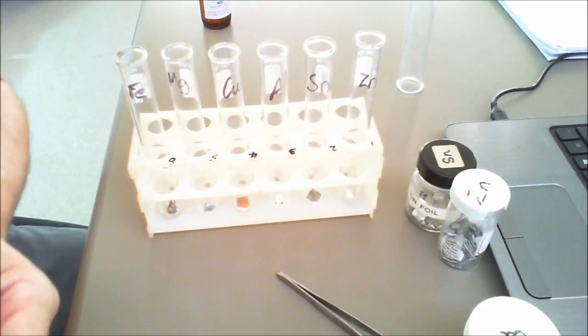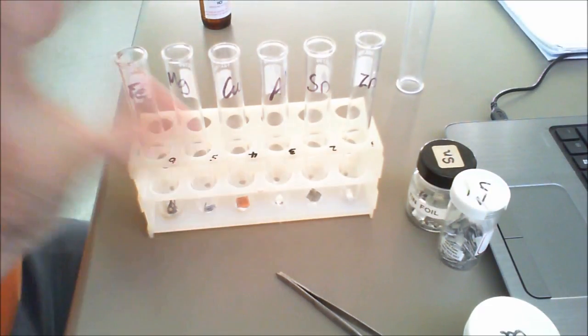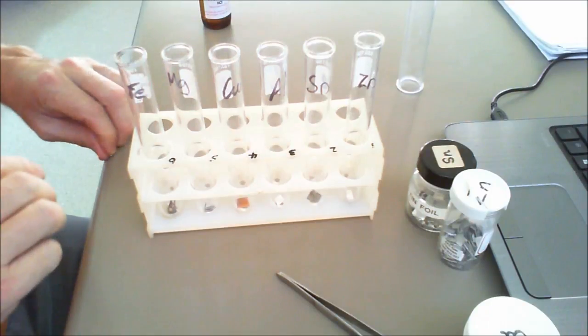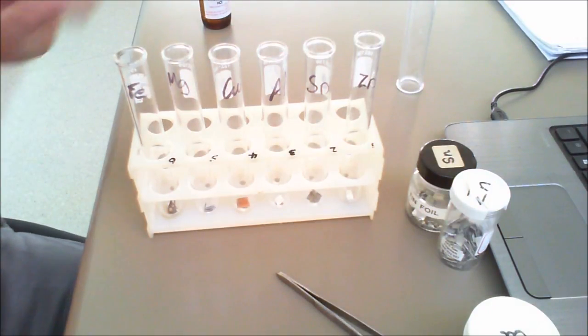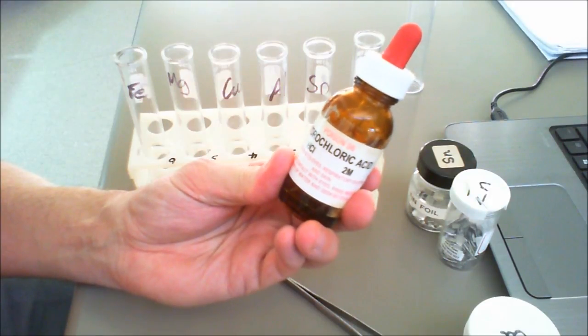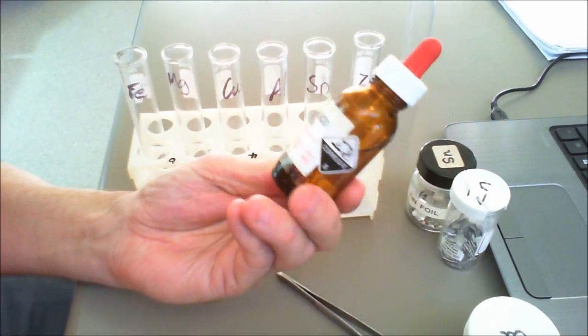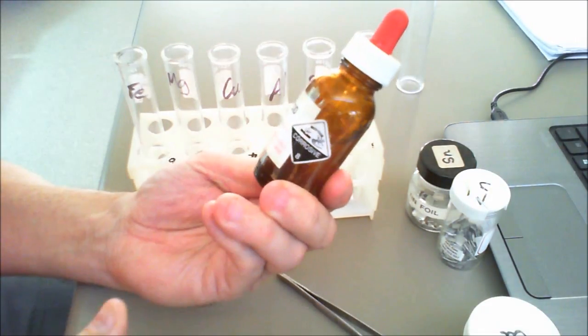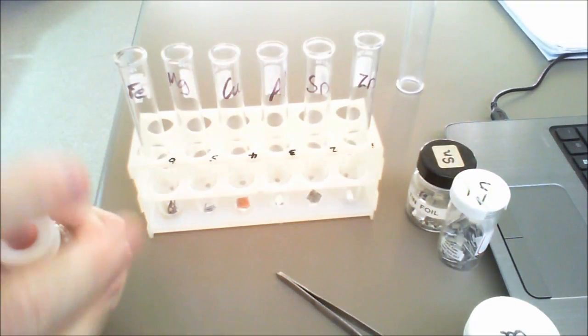Now again, obviously with this particular practical, the idea is to make sure that everything's labeled, everything's easy to see and easy to read. Now what I'm going to do is use our good friend, two molar hydrochloric acid. This one's got the corrosive sign on it, and that tells us that it is in fact corrosive.